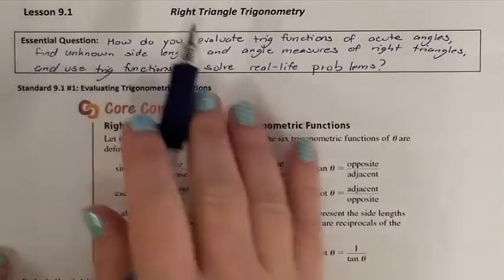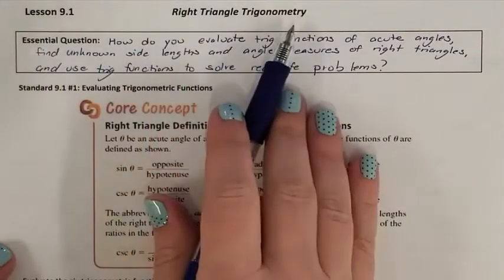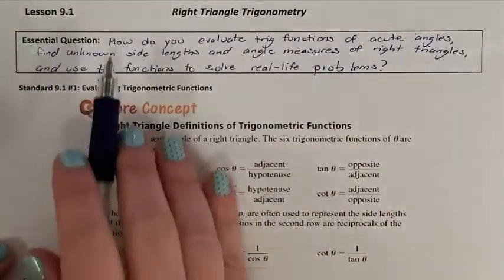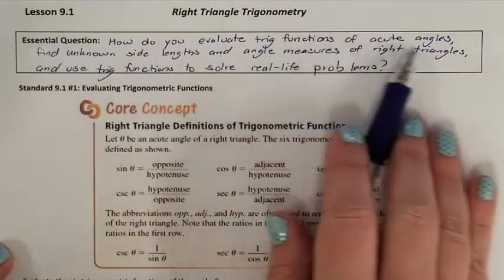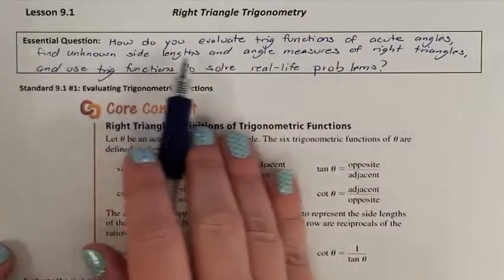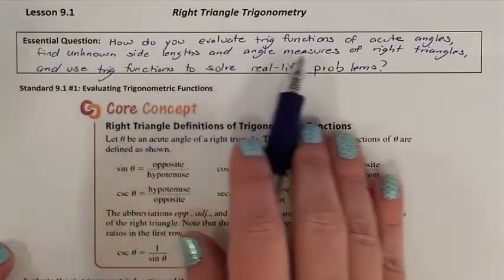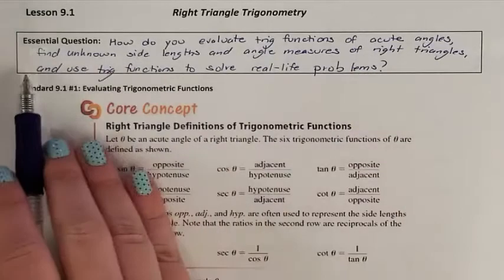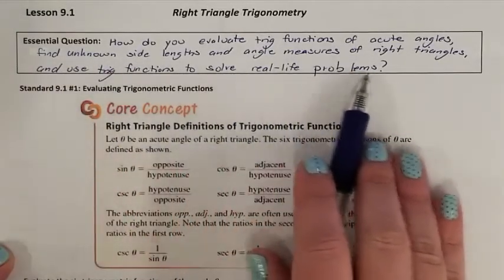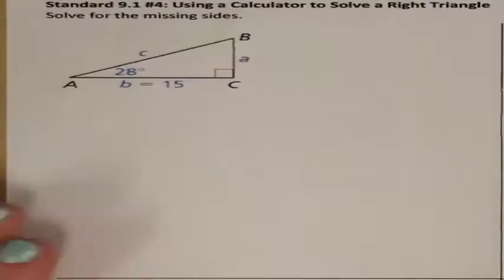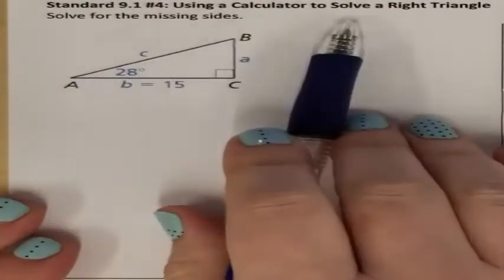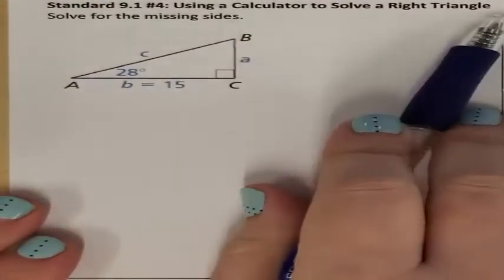Lesson 9.1, Right Triangle Trigonometry. Our essential question: how do you evaluate trig functions of acute angles, find unknown side lengths and angle measures of right triangles, and use trig functions to solve real-life problems? Standard 9.1, number 4: using a calculator to solve right triangles.